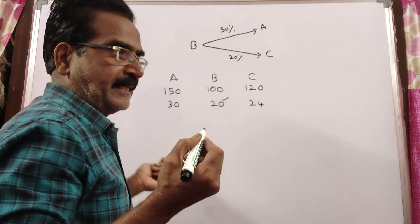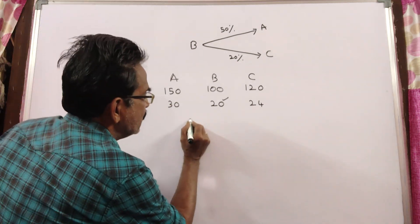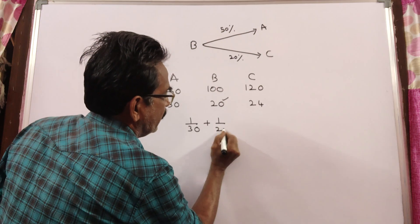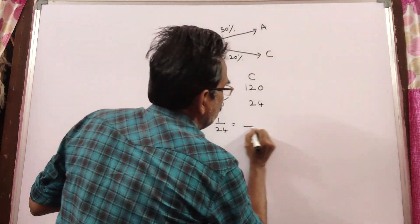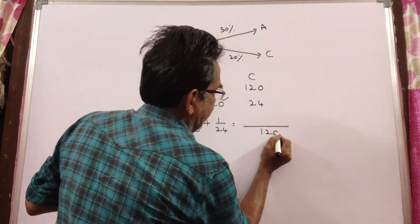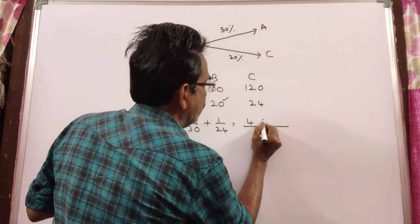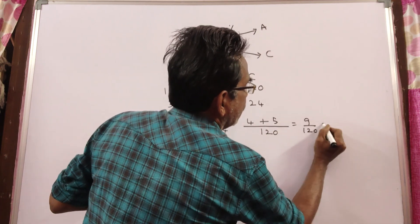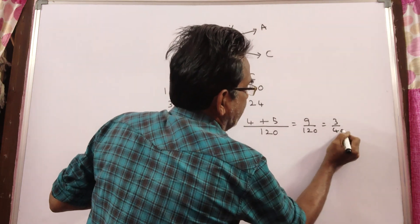Now, we want A and C together can complete the work in how many days? So, 1 by 30 for A, 1 by 24 for C. So, the LCM is 120: 4 by 120 plus 5 by 120 equals 9 by 120, that is equal to 3 by 40.